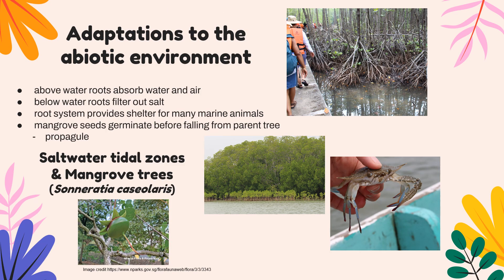The mangrove tree is another organism adapted to a stress zone. Mangrove trees live in saltwater tidal zones where salinity is a little higher than ideal. They have both above- and below-water roots. The above-water roots absorb water and air through pores called lenticels — unlike stomata, lenticels allow oxygen gas to diffuse in rather than water vapor to diffuse out. That oxygen is used to oxygenate the below-water roots. The below-water roots are very good at filtering out salt, since too much salt would make the plant hypertonic, which is problematic.